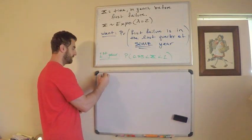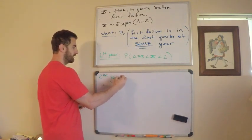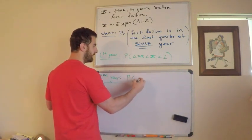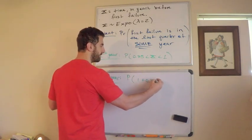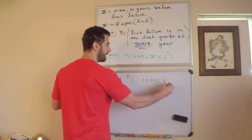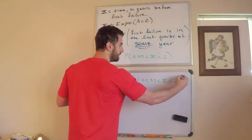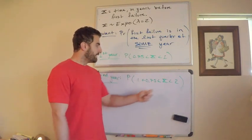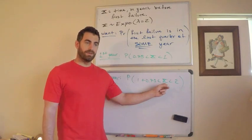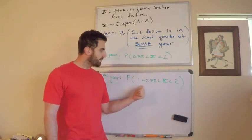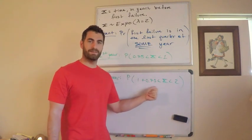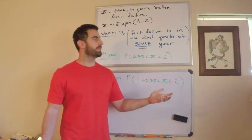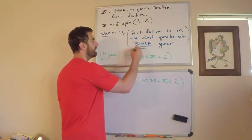What about the second year? Well, the second year, I think you know. I mean, just add 1. It's the probability that 1 plus 0.75 is less than x is less than 2. So, again, I mean, hopefully this is a pretty self-explanatory, but this is the time in years of the first failure. And it's right after the beginning of the third quarter of the second year, right? Before the second year. So, it's the last quarter of the second year, right? Because I'm all, everything hinges on this. Some year.